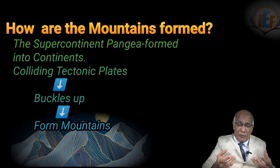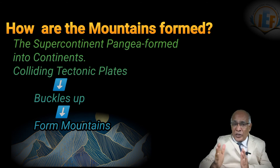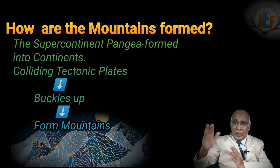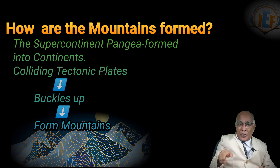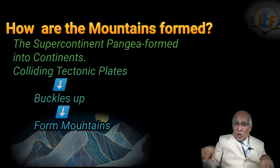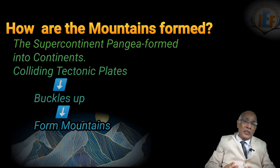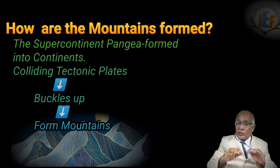If you see the world map or the globe, you find that North America, South America, the shapes you see — Africa's shape, Eurasia's shape, and Australia's shape. If you can fit them together, you find they form like one piece. But because of the continental drift, the plates were going away from each other, and that drifting of the plates caused the continents to separate.